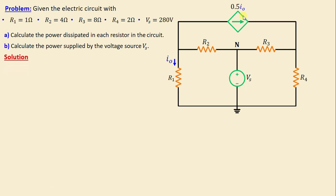We are going to apply Kirchhoff's laws to solve this problem. First, let's select arbitrarily currents for each branch to facilitate the analysis. IO is the current through R2, IB is the current through the voltage source VS.